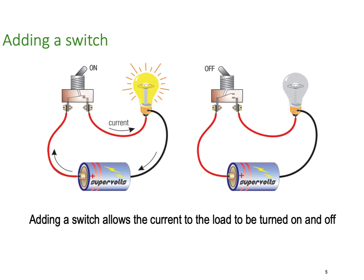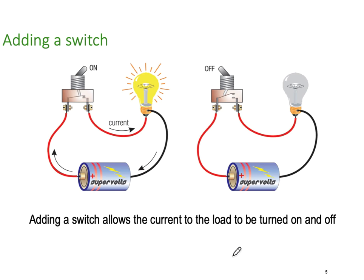We're now going to add a switch so we can control what's going on — basically we're adding a purposeful open circuit. Adding a switch allows the current to the load to be turned on and off. It's very important you pick this up as early as possible: we are switching the current to the load on and off. We are not switching the voltage — we are switching the current.